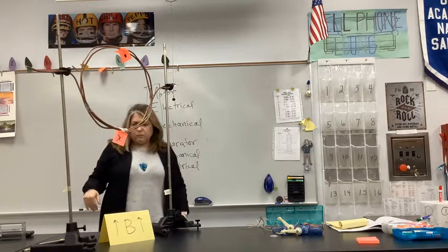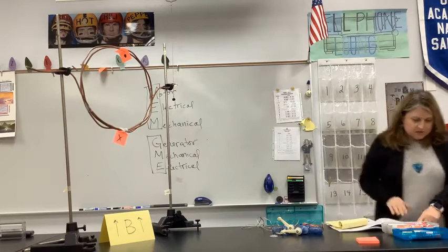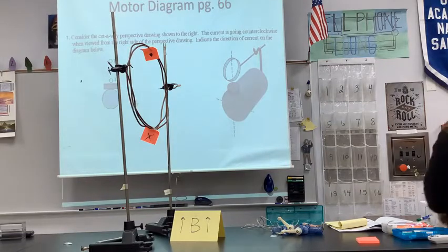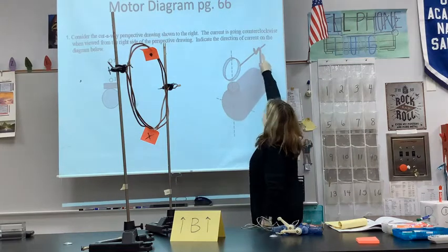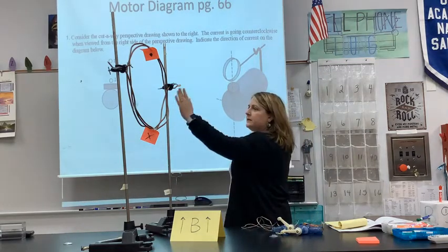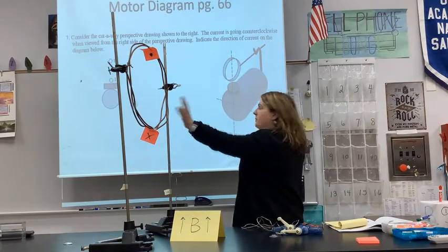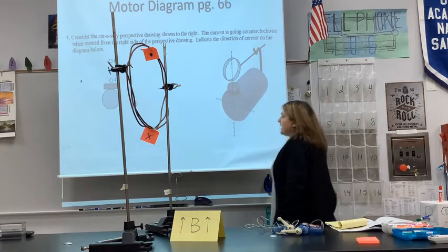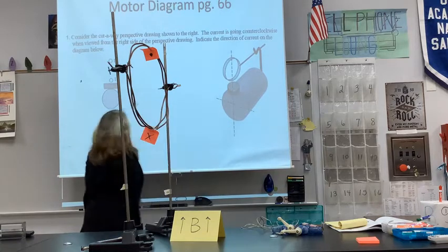I wanted to point out the diagram on page 66. This is a diagram of a simple electric motor. There's a battery providing the current. The current flows through these metal supports and into the armature or the coil of wire. This is the magnet that's providing the magnetic field.